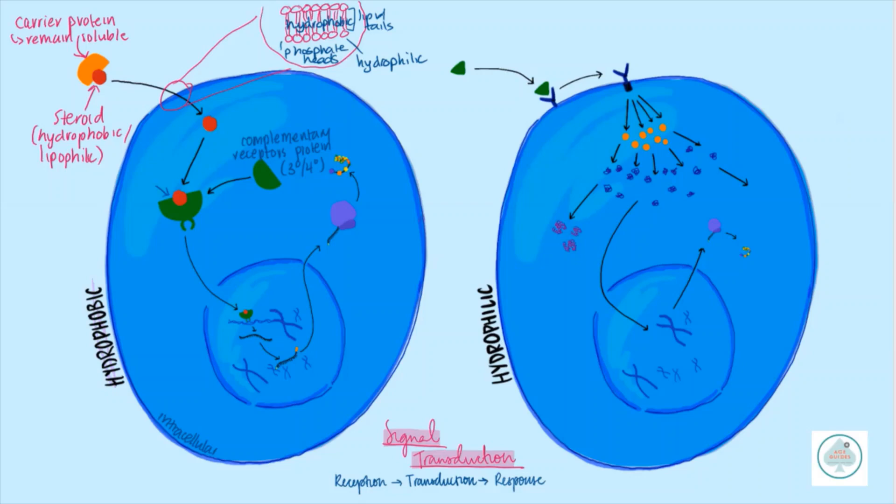We then get our ligand-receptor complex. Complex just means they have come together, they are now as one, and when that happens there is actually a change in shape—a conformational change in tertiary or quaternary structure. That results in the exposure of this DNA binding region. This occurs on all hydrophobic pathways. Your messenger molecule moves directly through the plasma membrane, it's then received when it contacts its complementary receptor. There's a conformational change that exposes a DNA binding region.